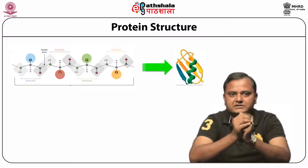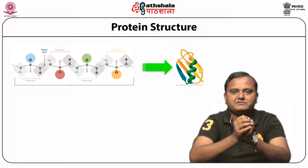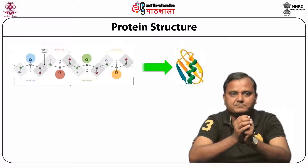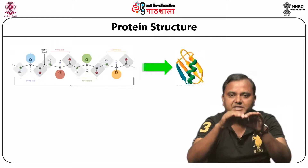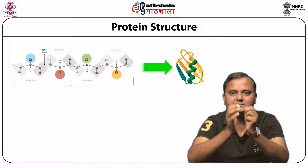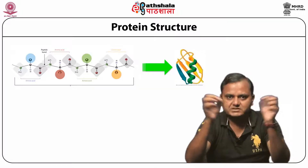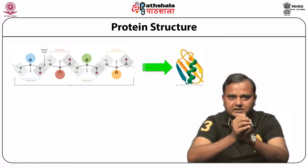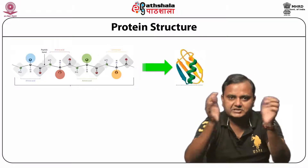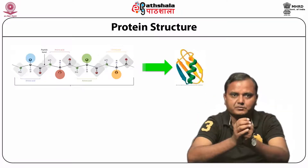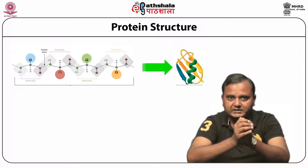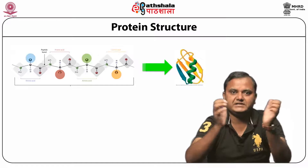The weak non-covalent interactions hold the protein in its functional shape. Although they are weak, these interactions maintain the protein's shape, and the side chains help determine the conformation in aqueous solution. The final conformation of the protein is called the native state, which has the lowest possible free energy.